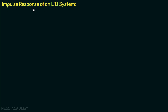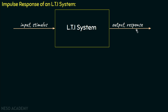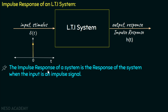To explain the impulse response, I will take one block diagram of an LTI system. On this side we have the input or the stimulus to the system, and on this side we have the output or the response of the system to that particular input. So whenever we give an input to the LTI system, we get one response. If I give an impulse as an input to this particular system, then the response I will get is called the impulse response. The impulse response of a system is the response of the system when the input is an impulse signal.